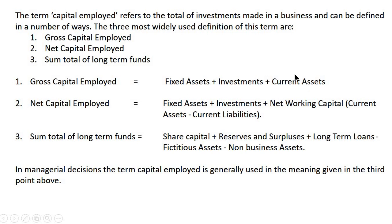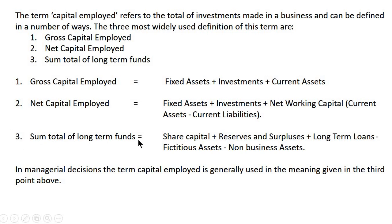In gross capital employed, we have taken total current assets. But in net capital employed, we deduct current liabilities from current assets, and the remainder is referred to as net working capital, which is added to investment and fixed assets. The third definition, sum total of long-term funds, refers to share capital plus reserves and surplus plus long-term loans minus fictitious assets minus non-business assets. In managerial decisions, capital employed is generally used in the meaning of the third definition, that is sum total of long-term funds.